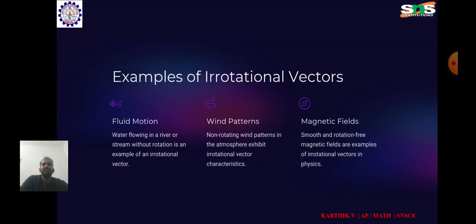Examples of irrotational vectors include fluid motion, wind patterns, and magnetic fields. In fluid motion, the flow of an invisible incompressible fluid around a stationary sphere at low Reynolds numbers is an example of irrotational flow. The velocity field around a stationary sphere is irrotational away from the surface.